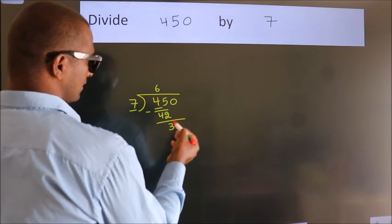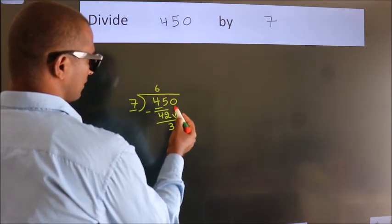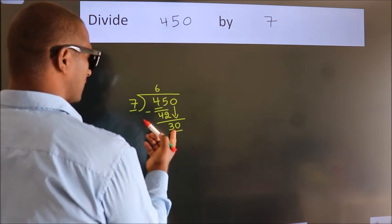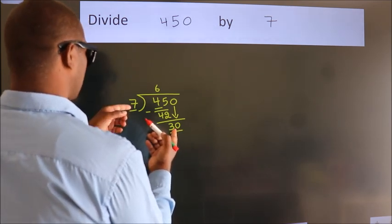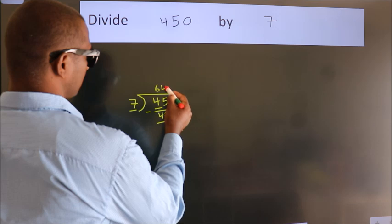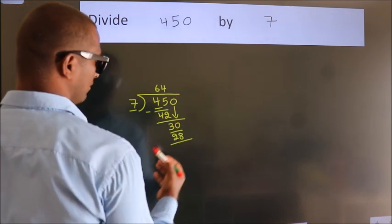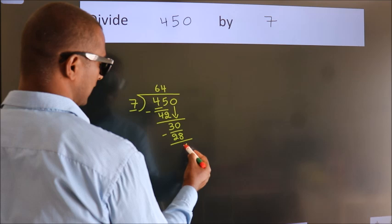After this, bring down the beside number. So, 0 down. So, 30. A number close to 30 in the 7 table is 7×4=28. Now we subtract. We get 2.